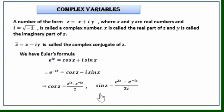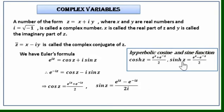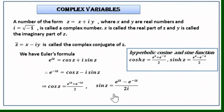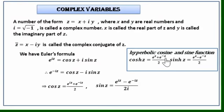These two forms look familiar because they are very similar to the definitions of hyperbolic cosine and sine functions. The hyperbolic cosine is cosh z = (e^z + e^(-z)) / 2, and sinh z = (e^z - e^(-z)) / 2. Comparing, here we have e^(iz) in place of e^z, so we will replace z by iz.